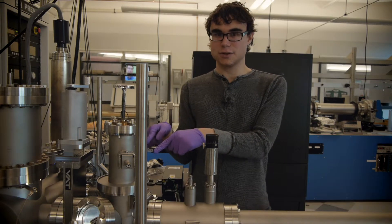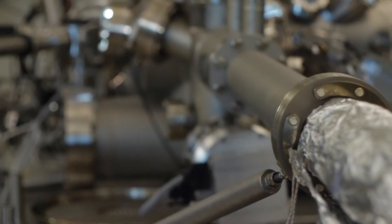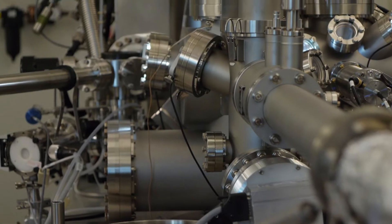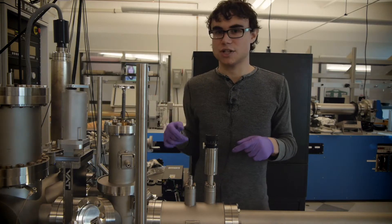Over here we have the chamber where the sample is loaded. Right next to it we have the transfer arm, which is used to move the sample from this chamber to the rest of the chambers.